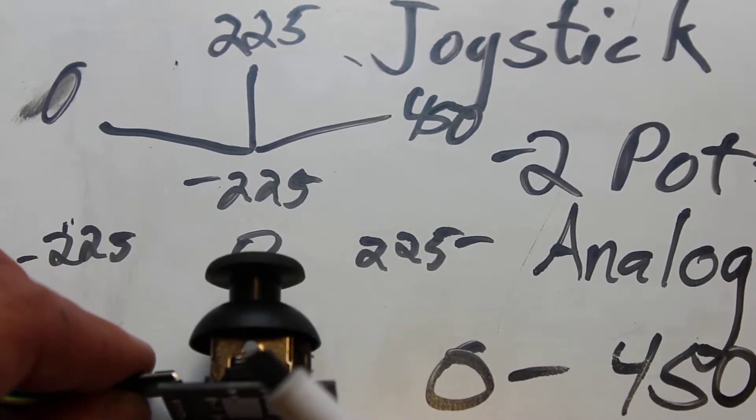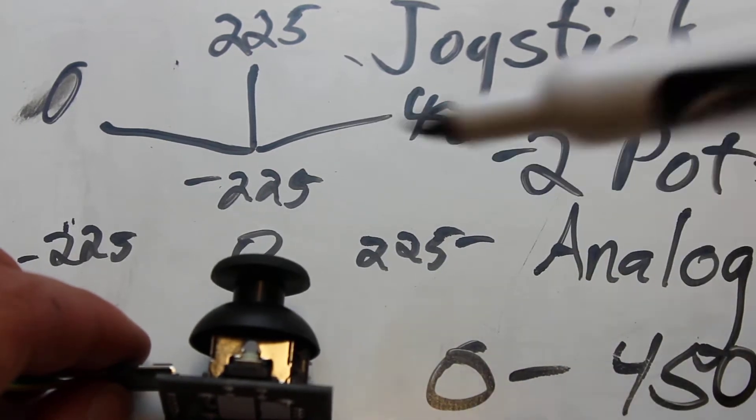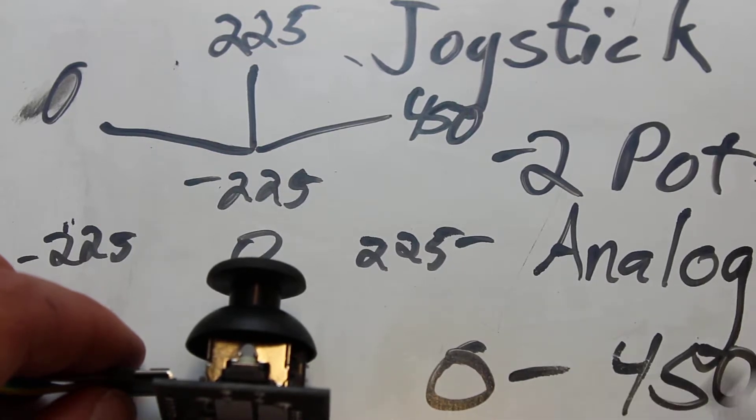So just to review, the joystick sensor for the Arduino is basically two potentiometers put at two different angles. They're both giving an analog output, generally in the range from 0 to 450, but do a print statement to see what your specific range is.